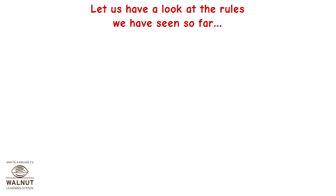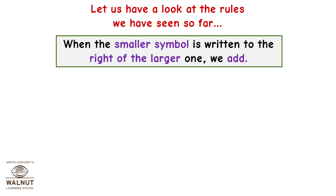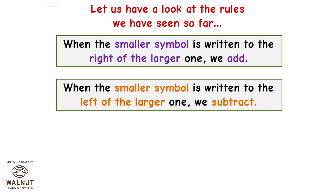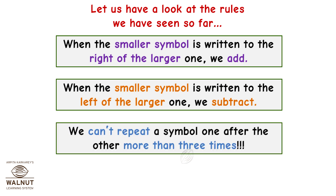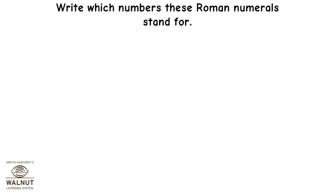Let us have a look at the rules we have seen so far. When the smaller symbol is written to the right of the larger one, we add. When the smaller symbol is written to the left of the larger one, we subtract. We cannot repeat a symbol one after the other more than 3 times.